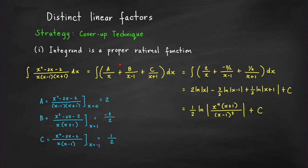To find a, b, and c, we use the cover-up technique. To find a, cover the x in the integrand — it's like having the expression without the x in the denominator — and evaluate it at the value of x that makes x equal to 0. When we plug in x equals 0, we get negative 2 over negative 1 times 1, which equals positive 2. So a equals 2, giving us 2 over x.